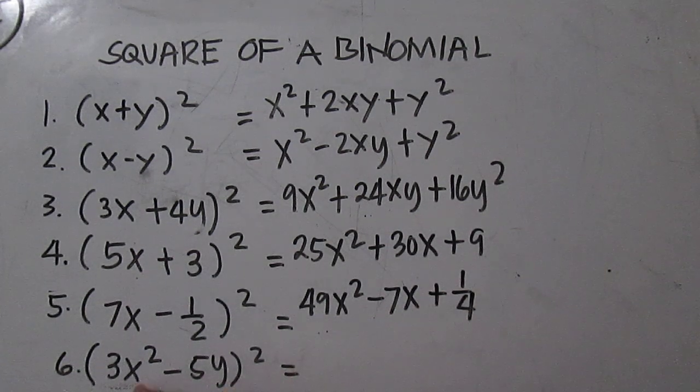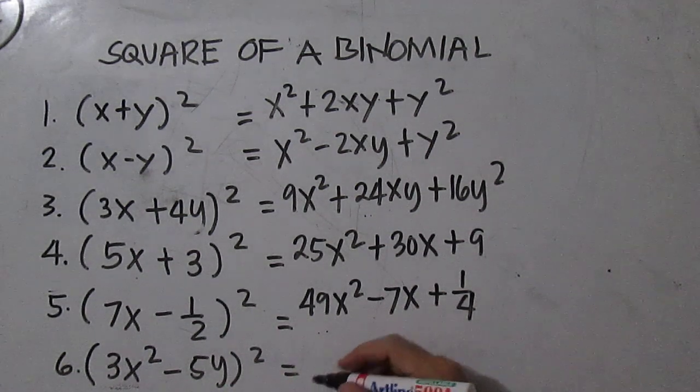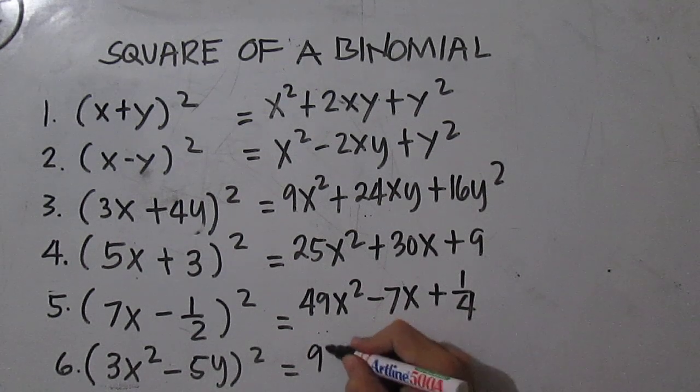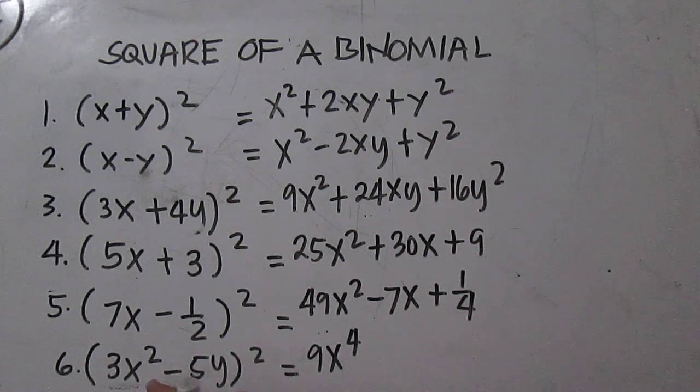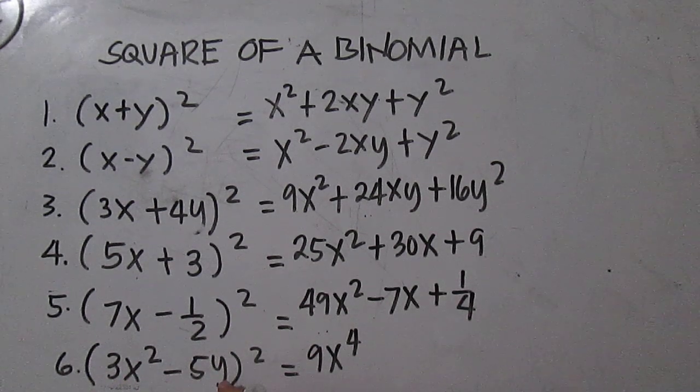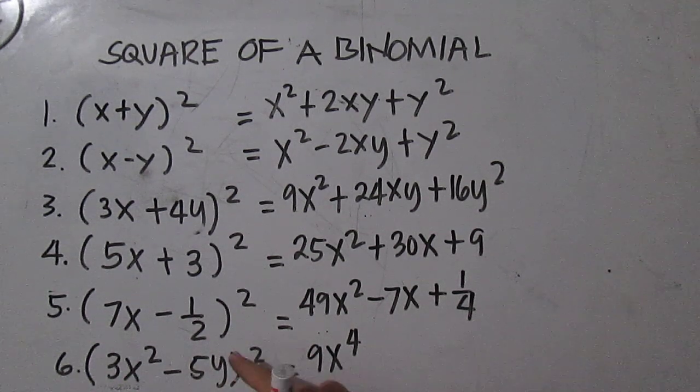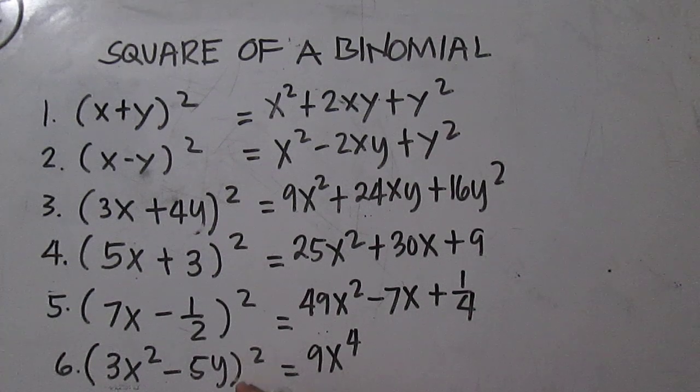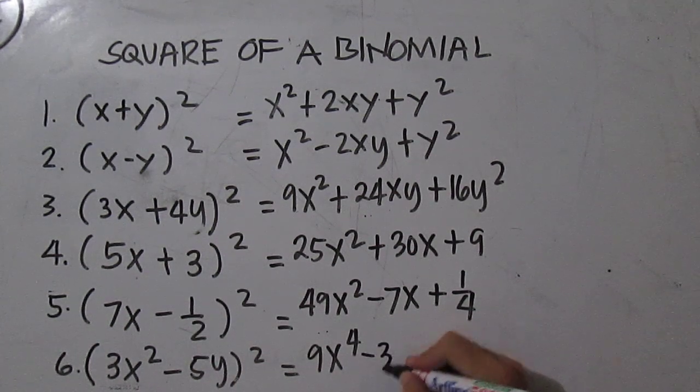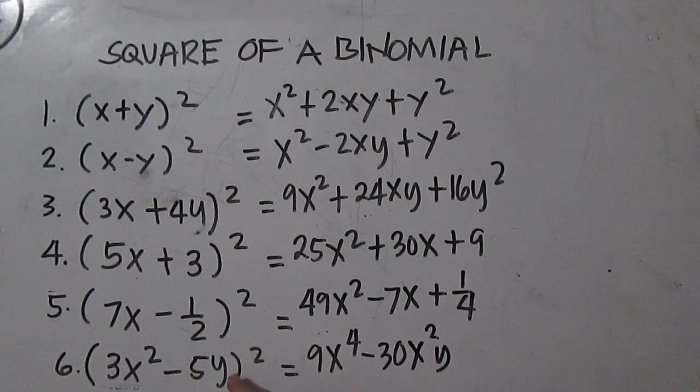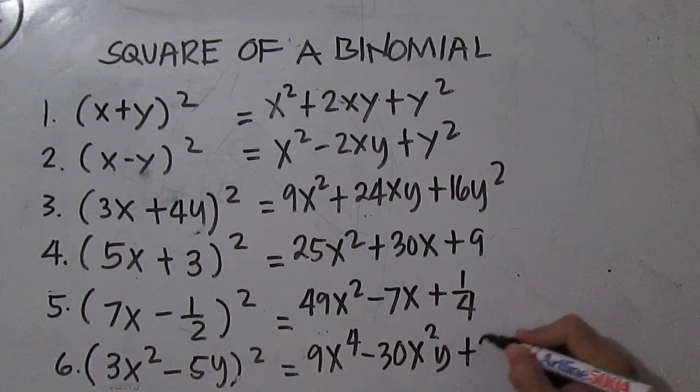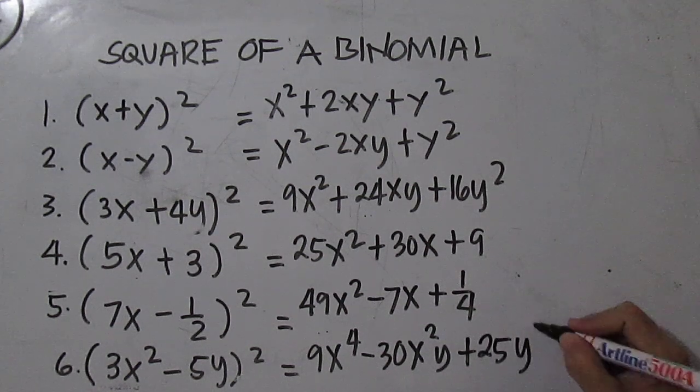For number 6: 3x squared times 3x squared is 9x to the power of 4. Then 3x squared times negative 5y is negative 15x squared y, times 2 is minus 30x squared y. Then negative 5y times negative 5y is 25y squared.